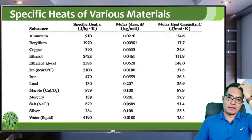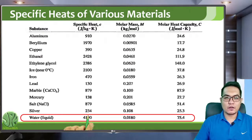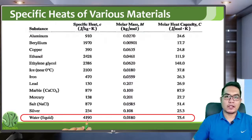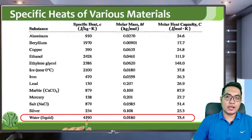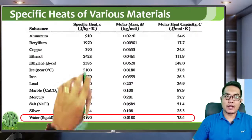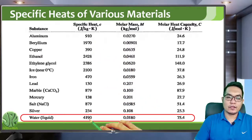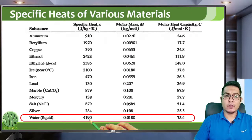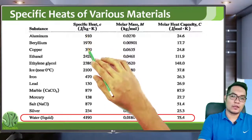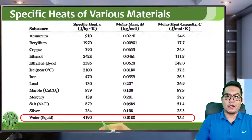These are the specific heats of various materials — let's focus on water. Looking at the formula for the quantity of heat for temperature change, specific heat is directly proportional to the quantity of heat. So the larger the value of specific heat c, the larger the amount of heat needed to change the temperature of that object. In this list, water has the highest specific heat, meaning water needs a lot more heat compared to aluminum or copper to change its temperature by the same amount.